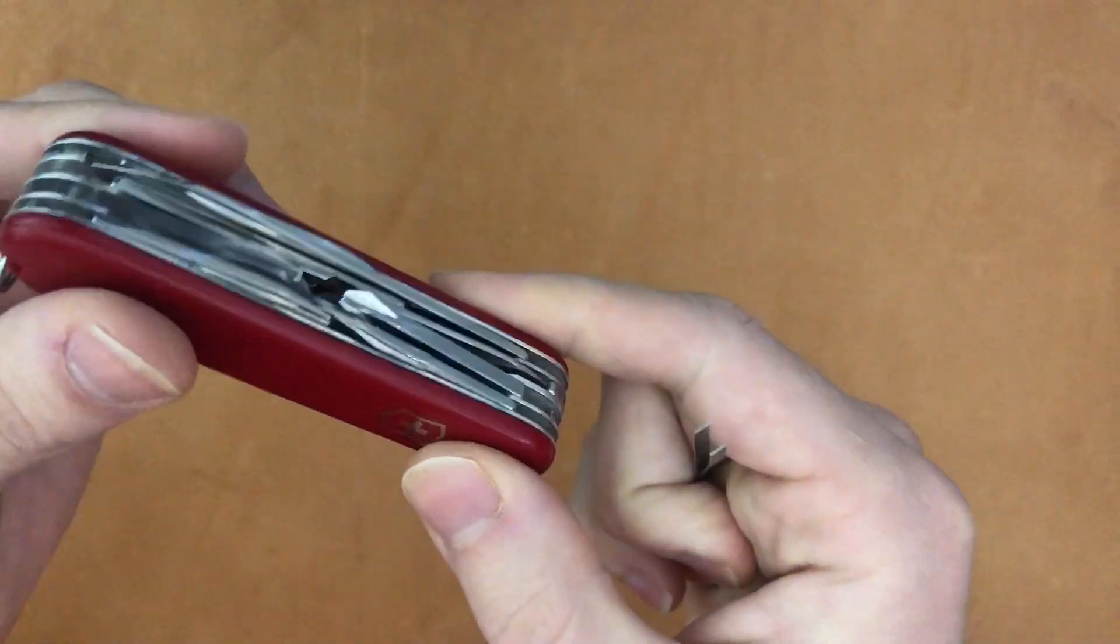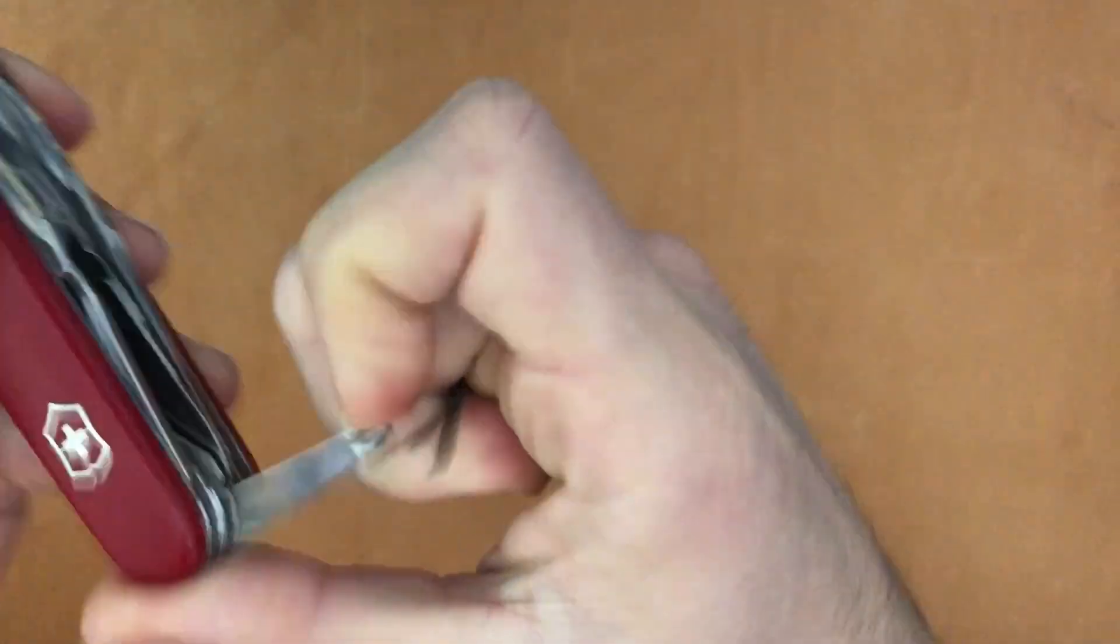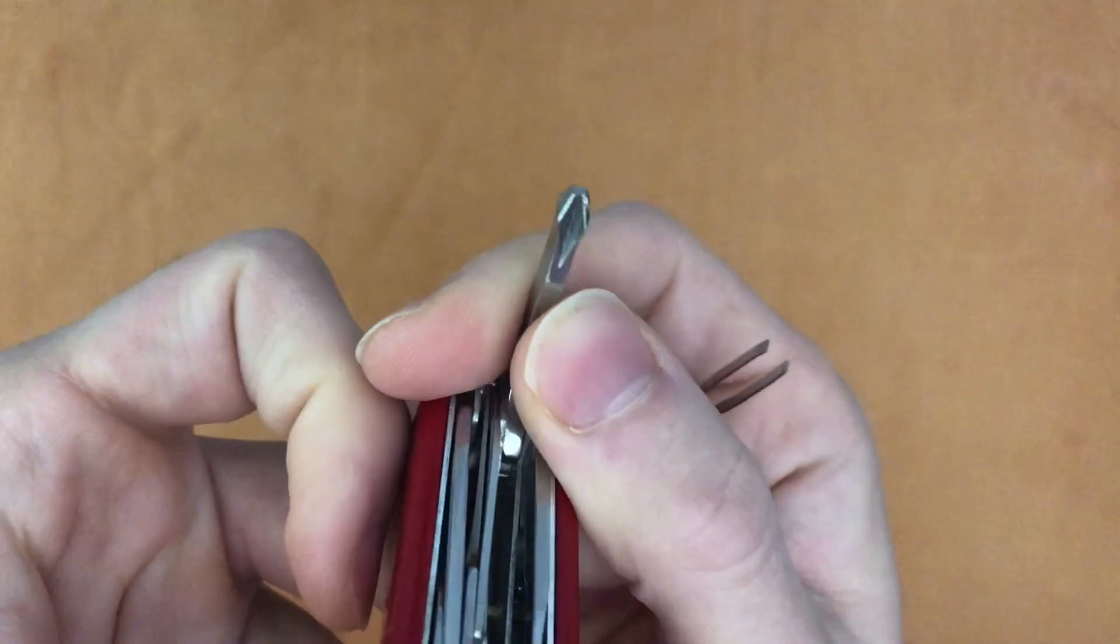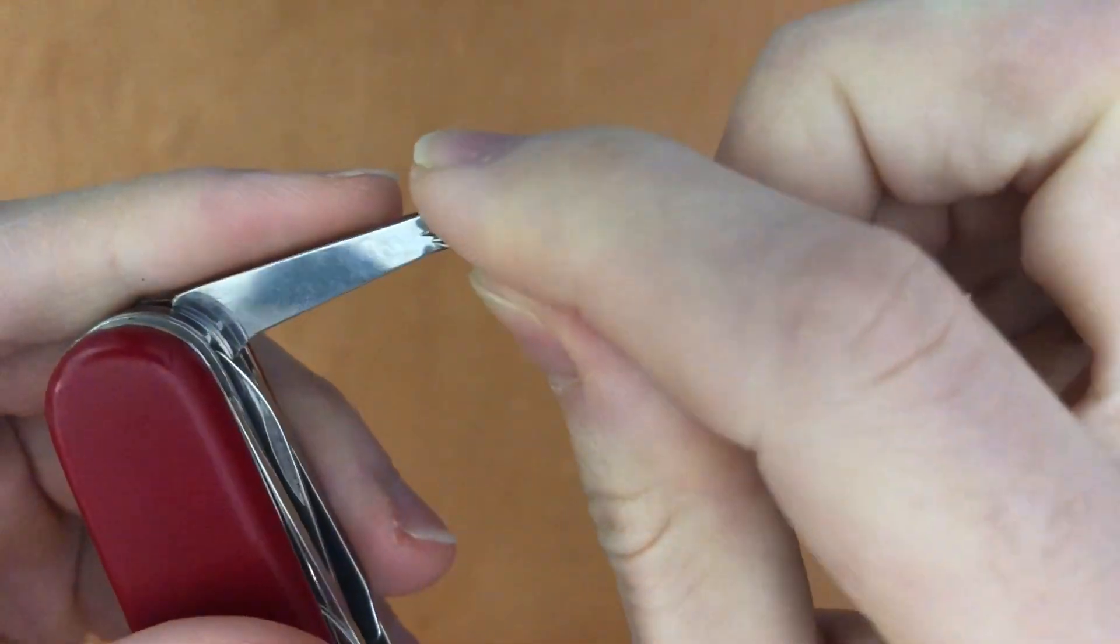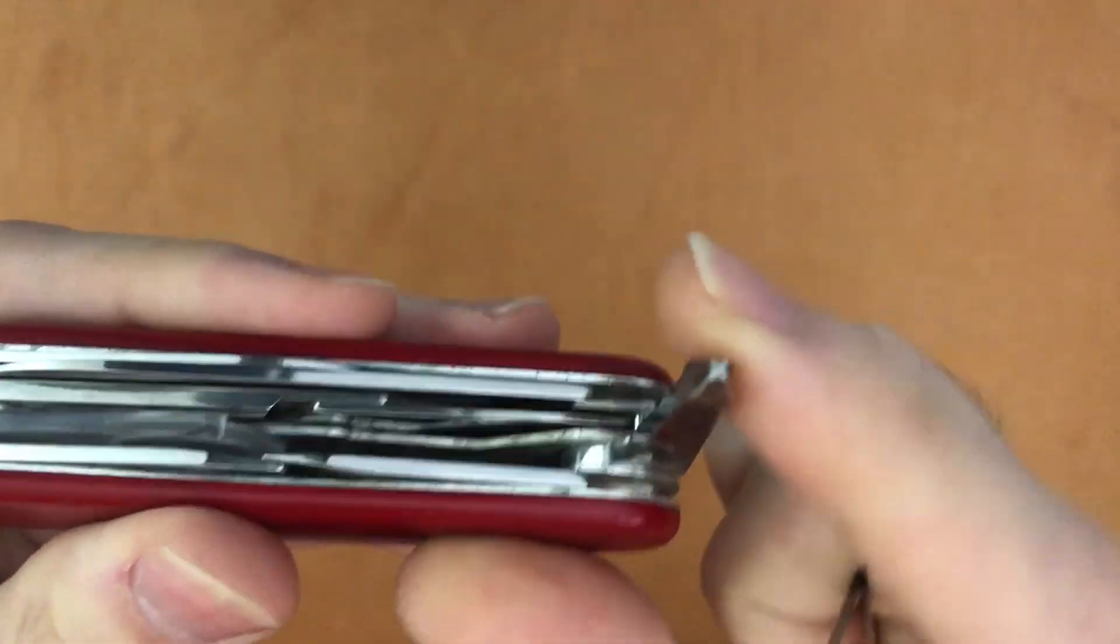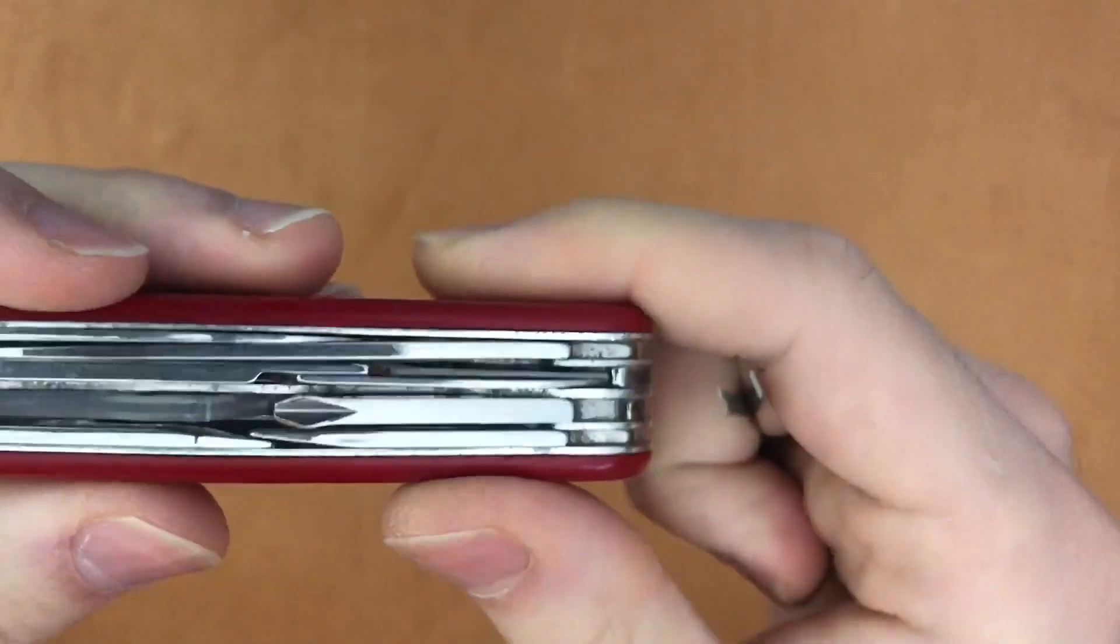Now hopefully your tool has the tweezers. You can see here my Phillips head is clean because I took the tweezers in here and just wiped off the rust and weird gunky stuff that have built up over time.